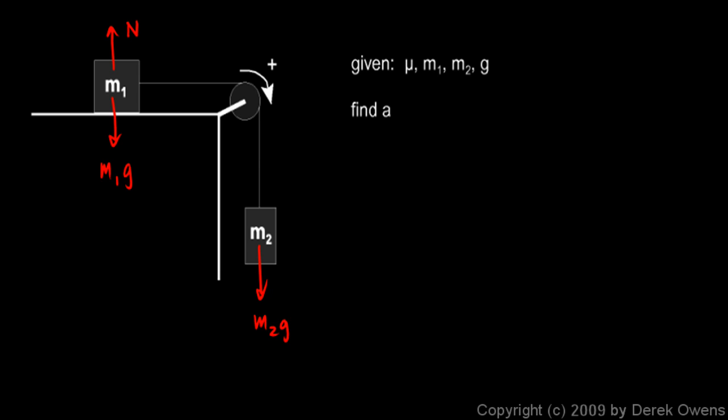In this case m2 pulls down, so m1 tends to slide to the right, so that means friction is going to be to the left. Friction always opposes the motion. If m1 is being pulled to the right, friction will be pulling against that. And friction I call little f.